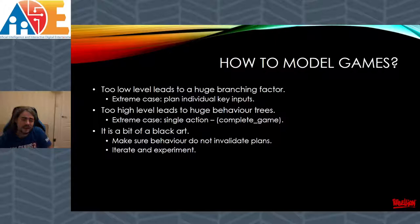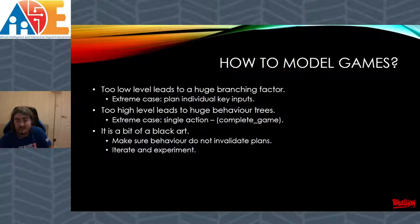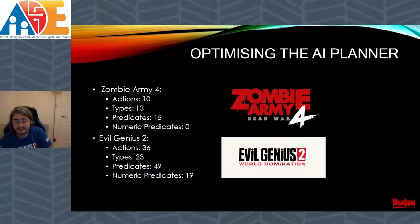Just to give an idea of how big these problems are: Zombie Army 4 has about 10 actions, 13 different types in its domain, and about 15 predicates. Whereas Evil Genius 2 has 36 actions, 23 types, 49 predicates, and 19 numeric predicates — a massively bigger problem. In both cases we need to optimize the planner to make sure everything runs smoothly and you get a solution in a reasonable amount of time. Basically three things we did: introduce heuristics, pruning of the action space, and better execution.